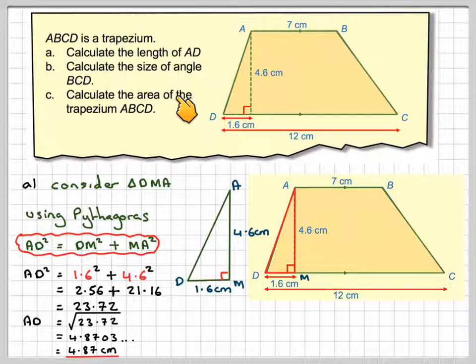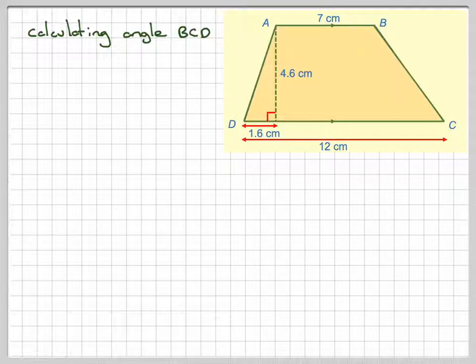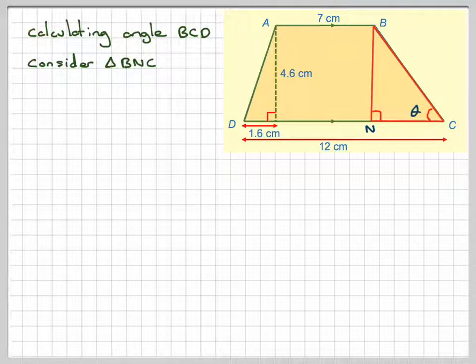Now we need to calculate the size of angle BCD, that's that angle there. To do that, I'm going to make this triangle here. Call this point N. So I've got this length here, and this length here, and this length here.